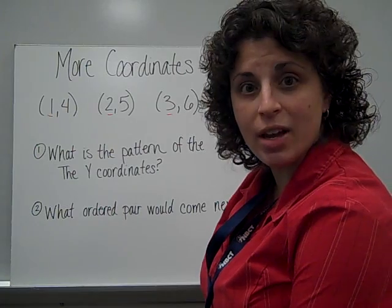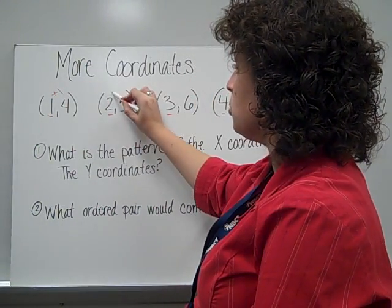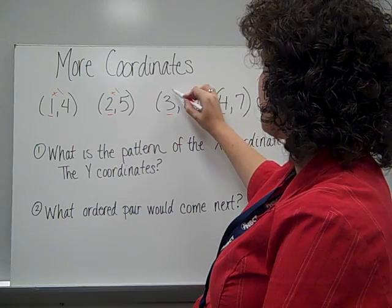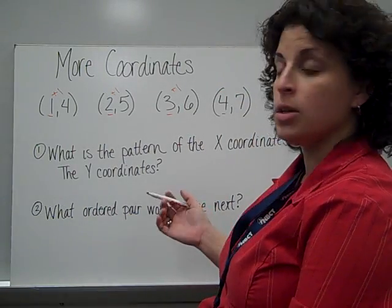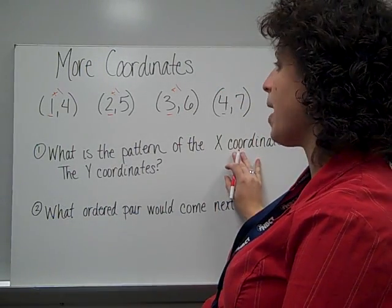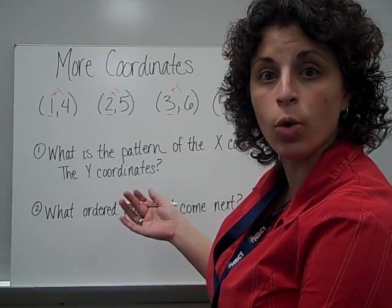How are those x values changing? Well, it's plus 1 to get 2, plus 1 to get 3, plus 1 to get 4. So our x coordinate pattern is plus or add 1.